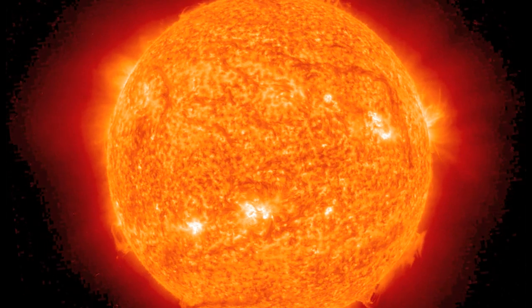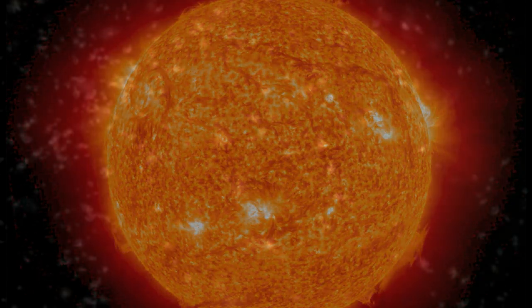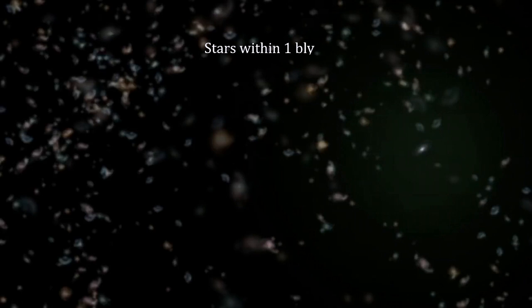The Sun is an average star, so we can use this as an average stellar power output. From our segment on local superclusters, we saw that there are 250,000 trillion stars within 1 billion light-years.